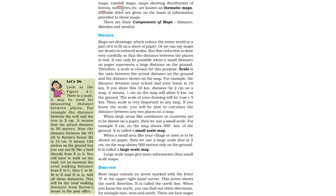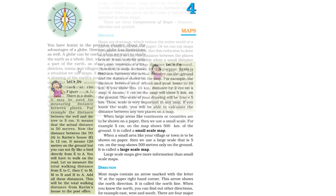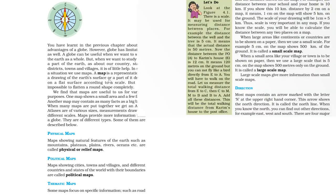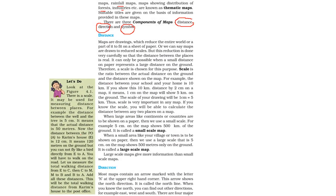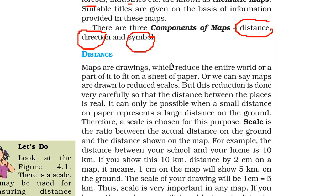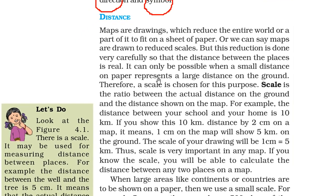There are three components of maps: distance, direction, and symbol. The maps we discussed are physical map, political map, and thematic map, though there are various other types such as choropleth maps. Now let us talk about the first component, which is distance.